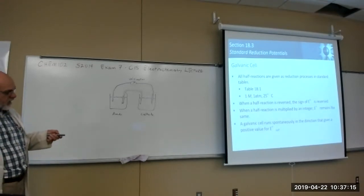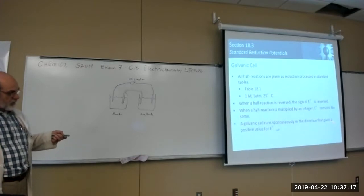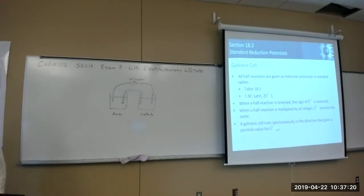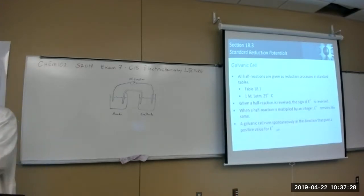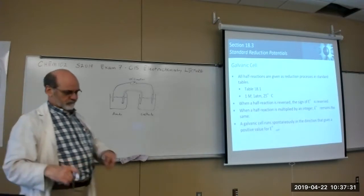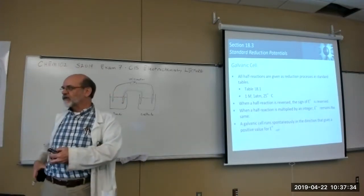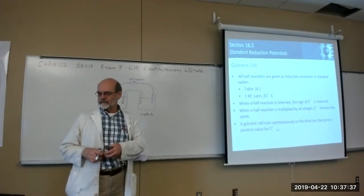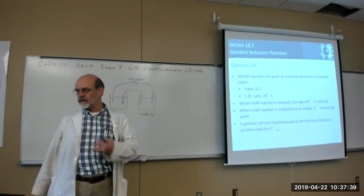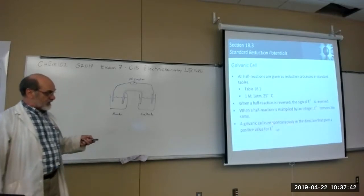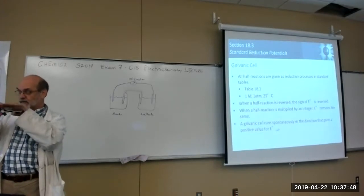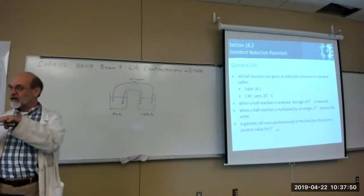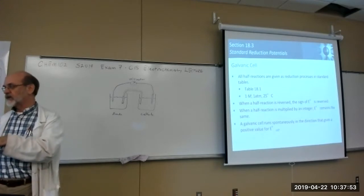This detail is important: if you want to know which way a cell will proceed spontaneously — giving you a voltage you can use to do work — the E value for both half cells together must be greater than zero; it has to be a positive value.